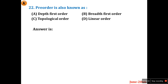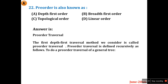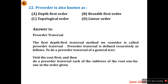Depth first and breadth first are very popular. I have explained topological order in a previous video. For this straight question: pre-order and post-order use two ways of searching. Pre-order is used for depth first search. Pre-order traversal is defined recursively: to do a pre-order traversal of a general tree, visit the root first, then do the pre-order traversal of each sub-tree of the root one by one in order. So the answer is A — pre-order is also known as depth first order.